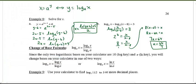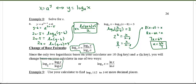There's one more useful property: the change of base formula. Your calculator only has two logarithm buttons — base 10 and base e — so to evaluate a logarithm with any other base, use the change of base formula: log base a of x = log(x) / log(a). You can use either log base 10 or ln in both numerator and denominator, as long as the base is the same in both.